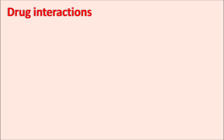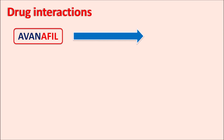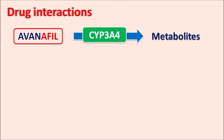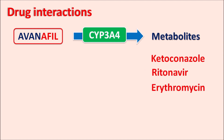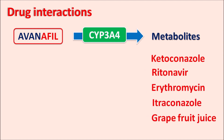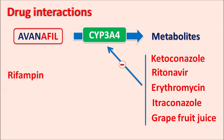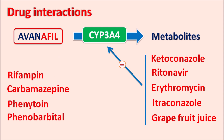Now let us see the drug interactions of avanafil. Avanafil is converted into metabolites within the liver by the cytochrome P450 system, particularly CYP3A4. Drugs that act as strong inhibitors of CYP3A4 — such as ketoconazole, ritonavir, erythromycin, itraconazole, and even grapefruit juice — can inhibit CYP3A4 activity and thereby increase the action of avanafil. Conversely, enzyme inducers such as rifampin, carbamazepine, phenytoin, and phenobarbital promote CYP3A4 activity and increase metabolism of avanafil, reducing its effect.